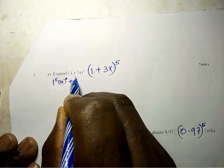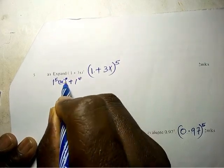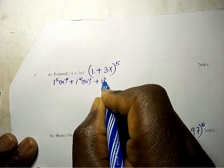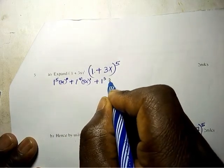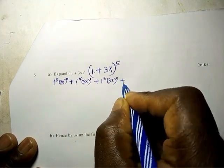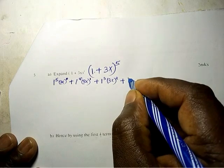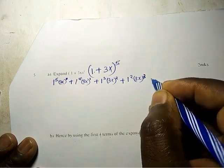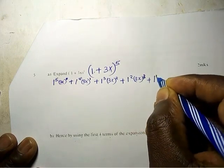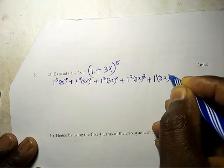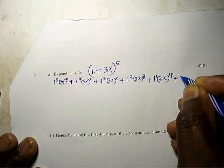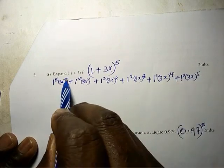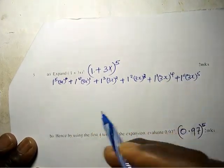...1^4 times (3x)^1 plus 1^3 times (3x)^2 plus 1^2 times (3x)^3 plus 1^1 times (3x)^4 and then finally 1^0 times (3x)^5. Any number to power 0 is always 1.